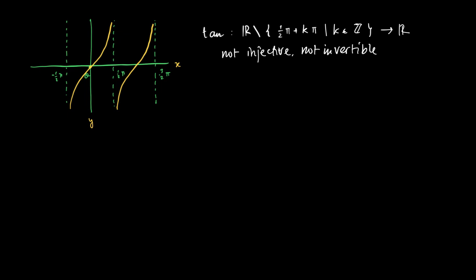Now consider the tangent. Here is the y-axis and the x-axis, and we draw the vertical asymptotes of the function at minus one-half pi plus k times pi, where k is an integer. The graph of the tangent is a periodic function with period pi, defined on R except at minus one-half pi, one-half pi, minus three-halves pi, and so on. It is not an injective function and therefore not invertible for the same reason as before.